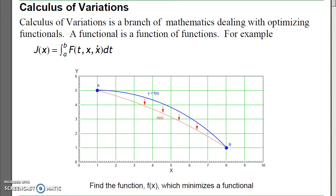Now calculus of variations is a branch of mathematics that deals with trying to optimize functionals. A functional is a function of functions. For example, if I want to go from point A to point B, I want to find out which path minimizes some functional. For example, if I want to build a road between A and B, which road is the minimum cost?